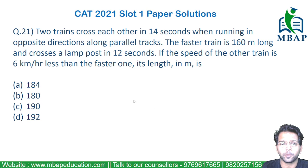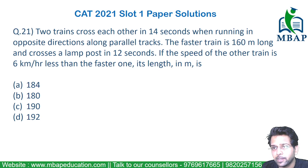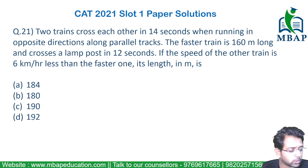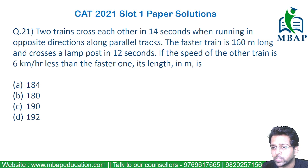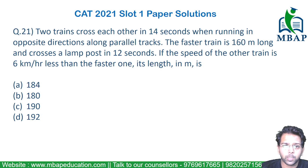Have a look at the next easy question which is from the topic of time, speed and distance. The question says two trains cross each other in 14 seconds when running in the opposite direction along the parallel track. The faster one is 160 meters long and crosses a lamp post in 12 seconds. The speed of the other train is 6 kilometers per hour less than the faster one. Find the length of the slower train.